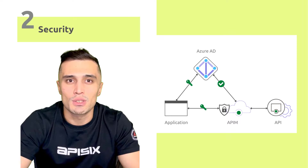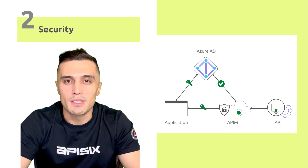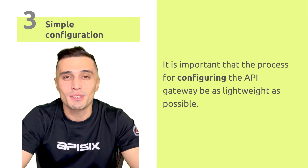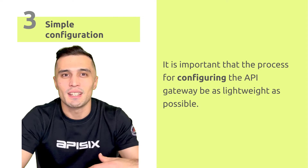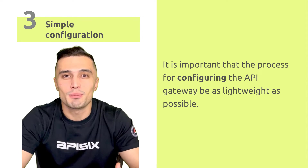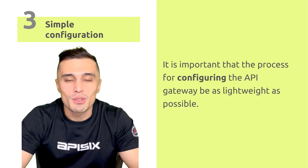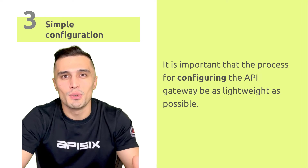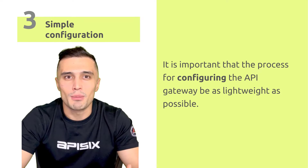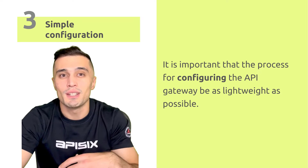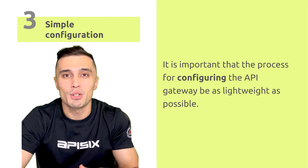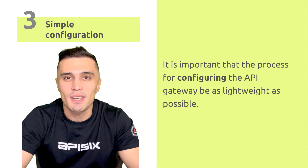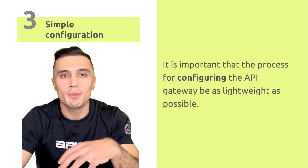Third is simple configuration. It's important that configuring the API Gateway is as lightweight as possible; otherwise developers would be forced to wait in line to configure the gateway. The configuration required for routing can become complex as the number of microservices or serverless APIs increases. Make sure updates to the API Gateway configuration take effect quickly without any downtime when you add or remove routes and upstream services.